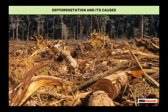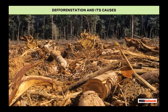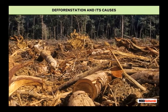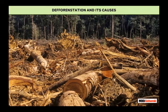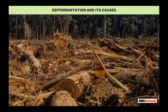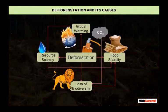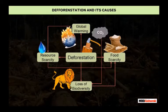The cutting down of trees on a large scale is called deforestation. Deforestation disturbs the ecosystem and the ecological balance in nature. It leads to unpredictable changes in the weather and climate patterns across the world.